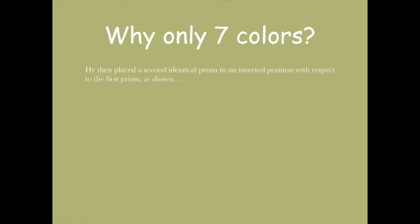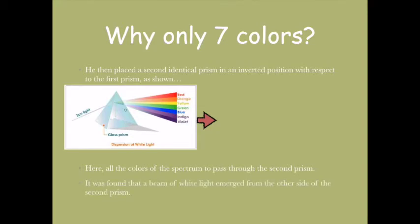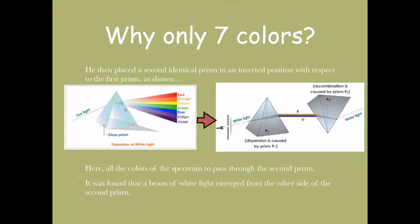Yes, there are only seven colors in white light. What Newton did was place another prism in an inverted position. He placed a second prism on the other side to see if these seven colors would disperse again. What he saw was that white color was observed again. He finally concluded that white color only has seven colors of VIBGYOR.